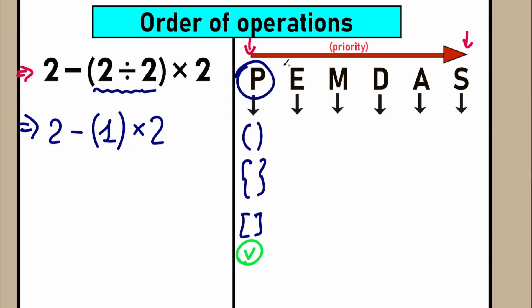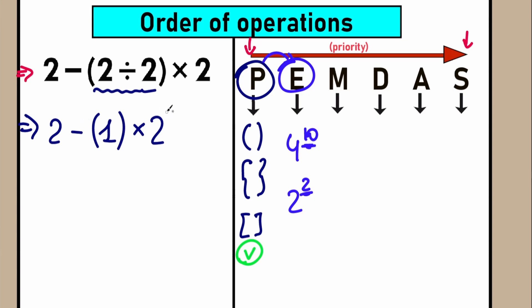Right now let's look at the next step, because after parentheses we need to find exponents — we need to evaluate the expression with exponents. Don't be scared about exponents; this is the same as powers, like 4 to the power of 10, or 2 squared. Where do we have powers? Looking at our expression after the first step, we can easily see that we don't have any exponents — no 2 squared, no 2 cubed. So we can easily skip this exponents part.